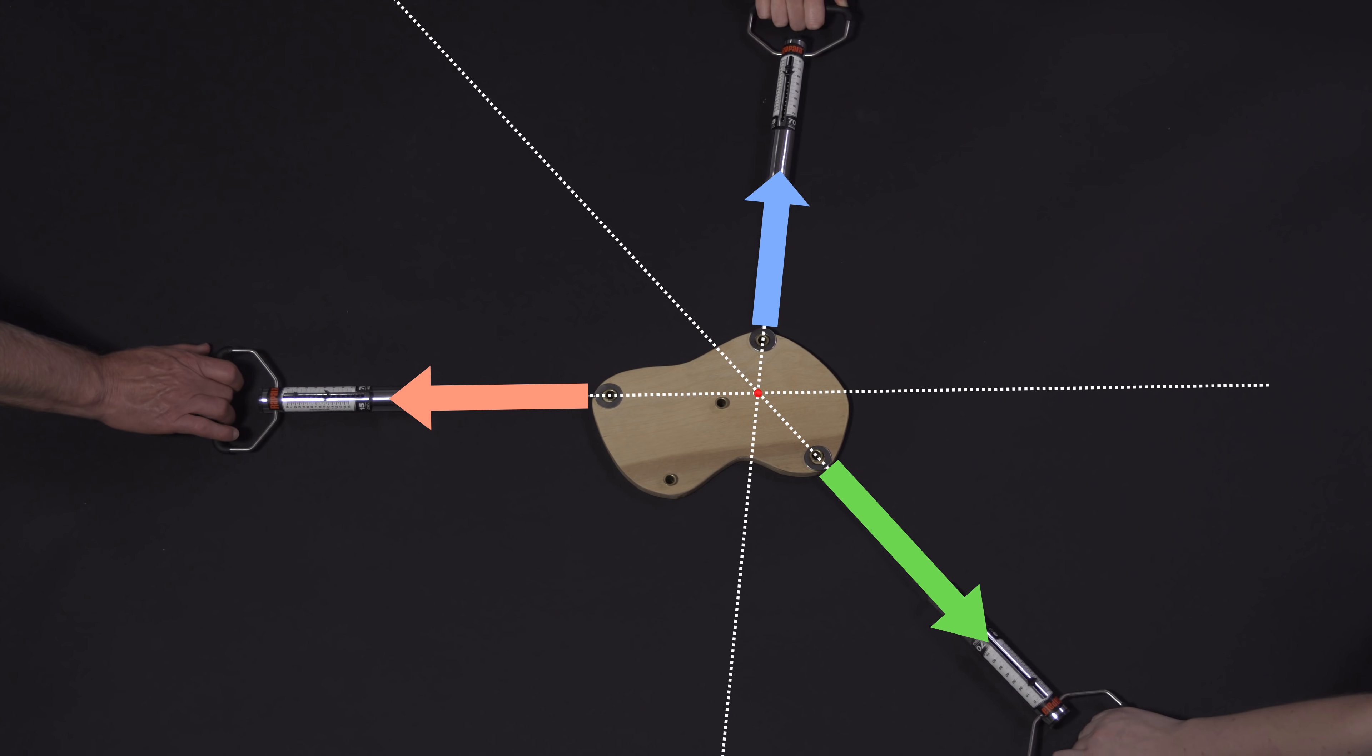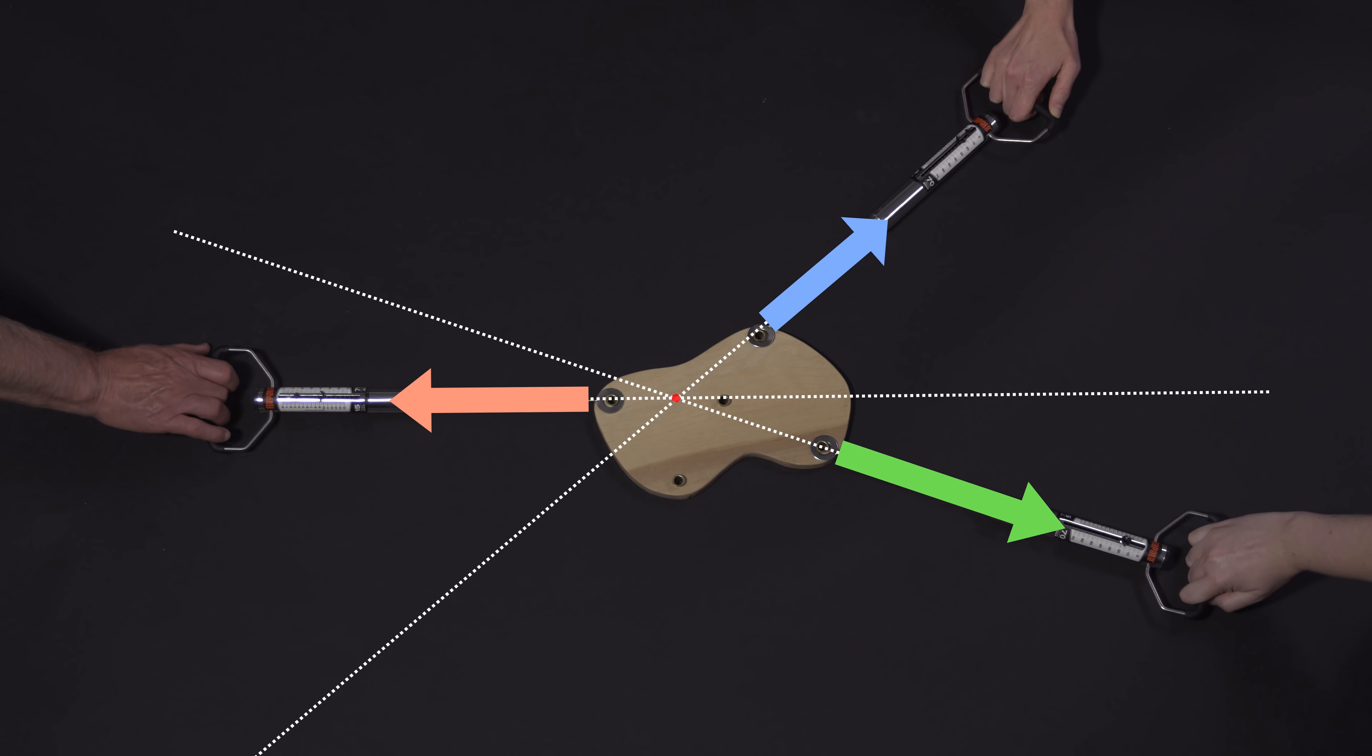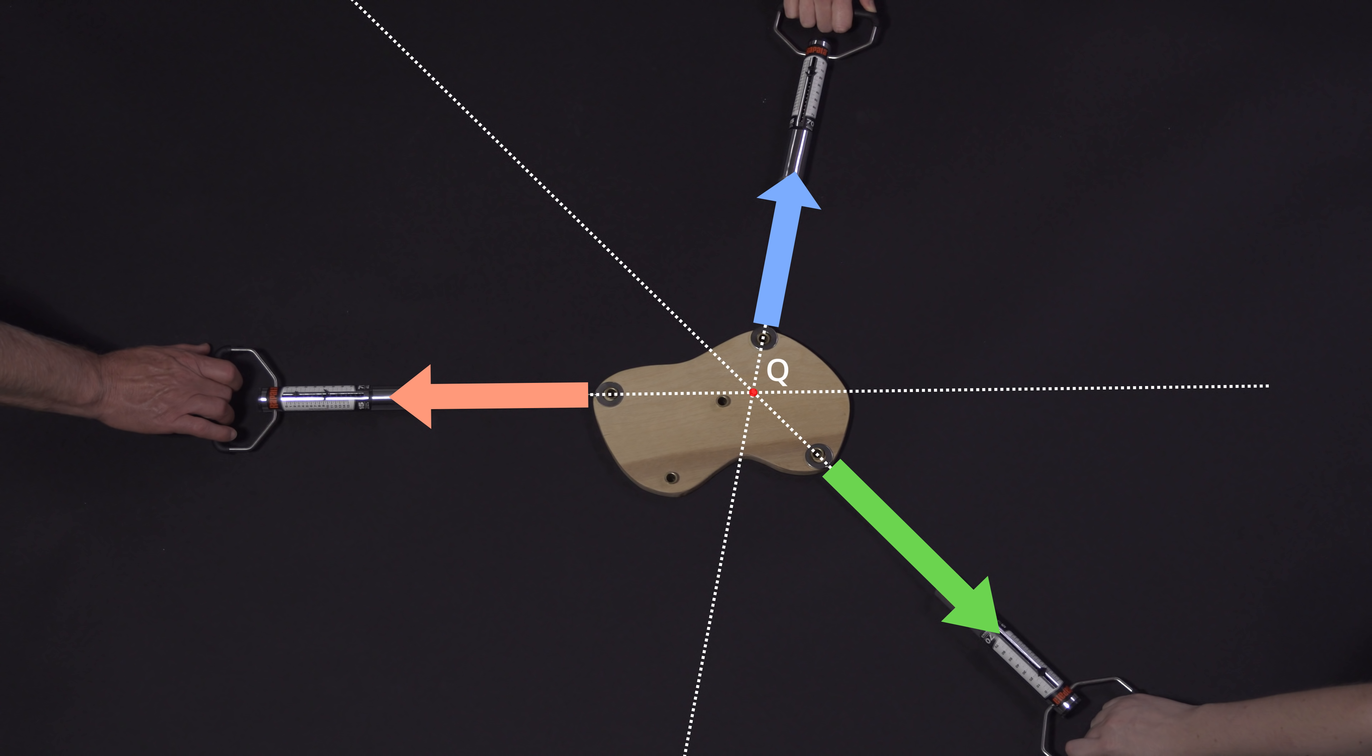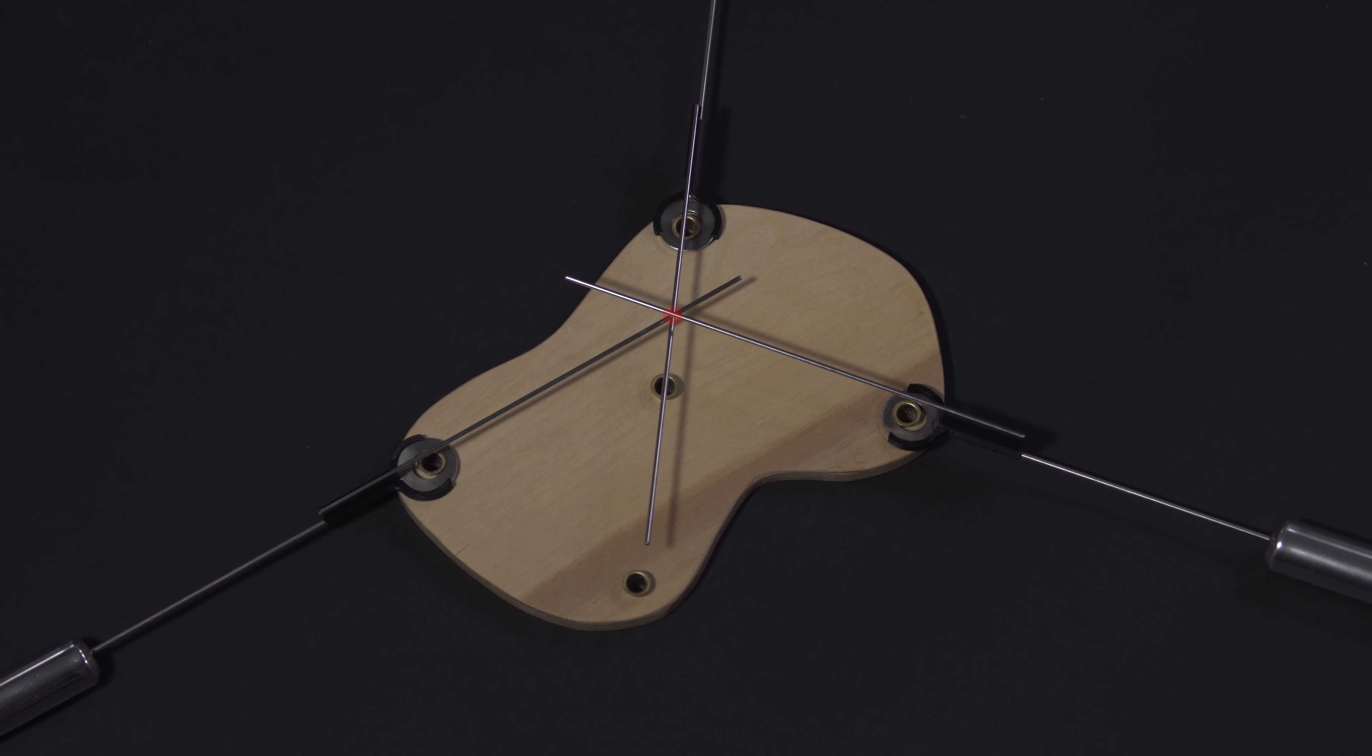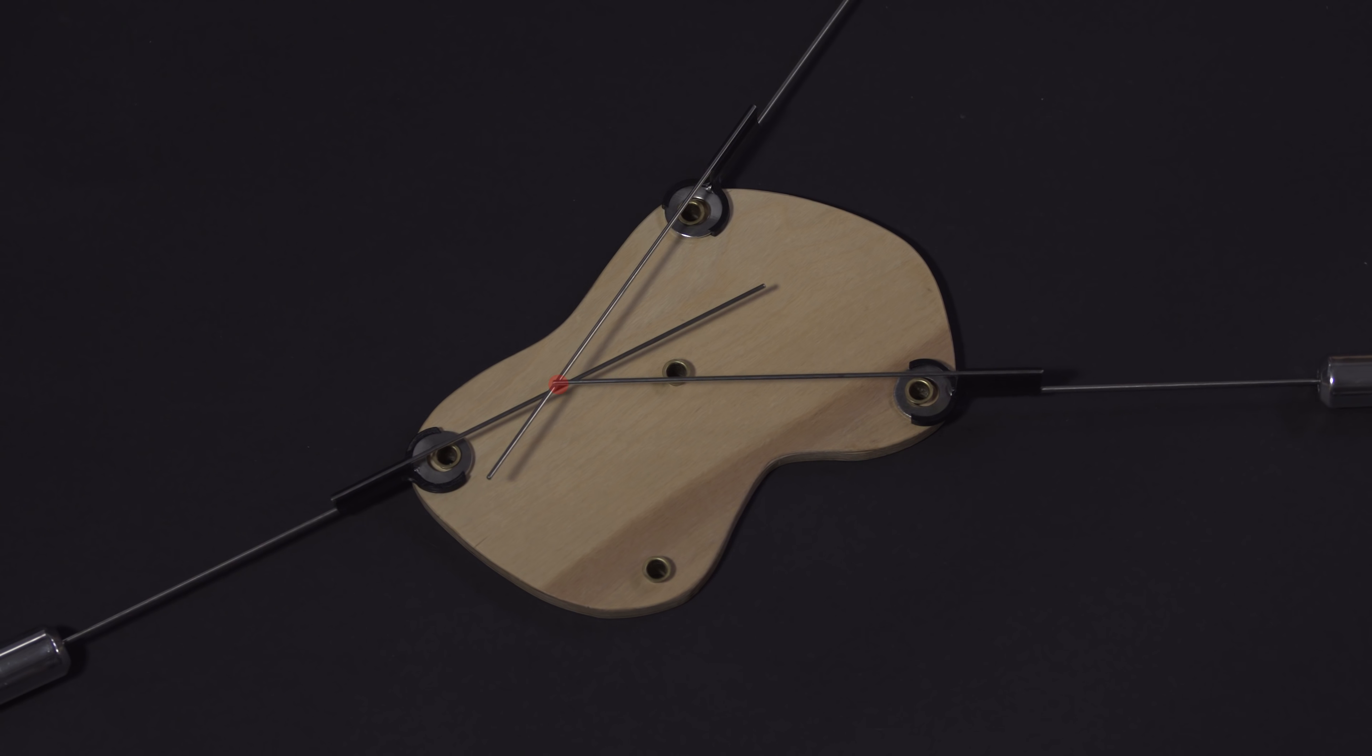It turns out that a body acted on by three forces will rotate until the lines of action of those forces pass through a common point. This relationship is known as the principle of concurrent forces, and it applies only to bodies that carry three forces. If you take moments about that common intersection point Q, rather than about A, all of the perpendicular distances to the lines of action are zero, and it is obvious that the sum of the moments will always be zero. In fact, it is impossible to arrange those three forces in such a way that their lines of action do not cross at a common point.